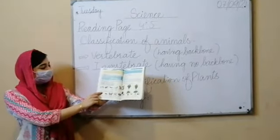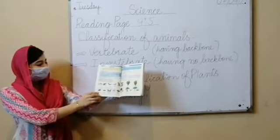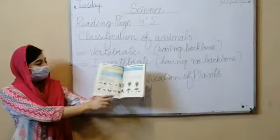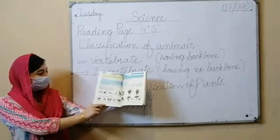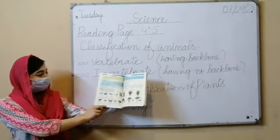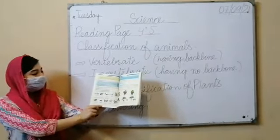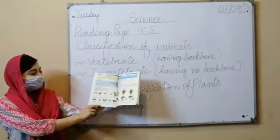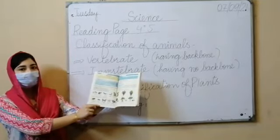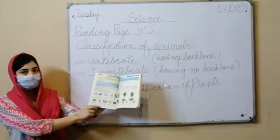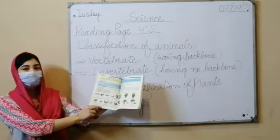Pictures of some invertebrates are given below. These are cockroach, honeybee, butterfly, starfish, and millipede — these are all animals that do not have a backbone and are invertebrates.